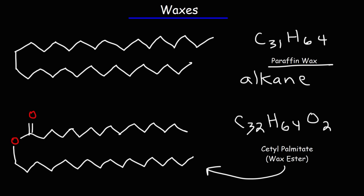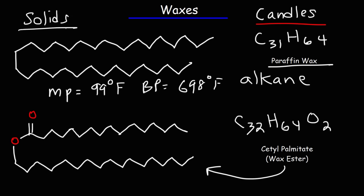Some examples of waxes include beeswax. Or the waxes that plants use to coat themselves in order to regulate evaporation and hydration. And even candles. Candles are made up of waxes, specifically the paraffin wax. Waxes have very high melting points. This particular paraffin wax has a melting point of 99 degrees Fahrenheit. And its boiling point, it's 698 degrees Fahrenheit. So at room temperature, waxes are solids. But if you raise the temperature, you can melt them into a liquid.